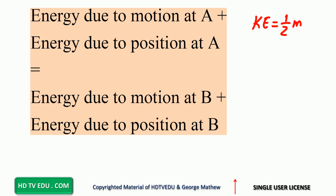Kinetic energy is one half m v squared. Energy due to position at point A is potential energy, and that is mgh. Do not forget: h can be positive, zero, or negative. For our case, h is positive 12. The object starts from rest, so speed is zero.